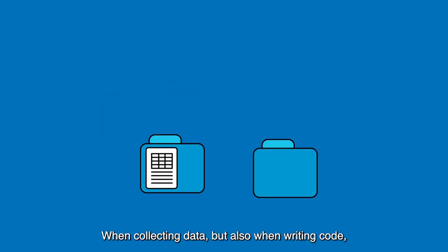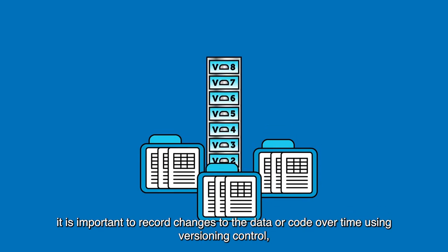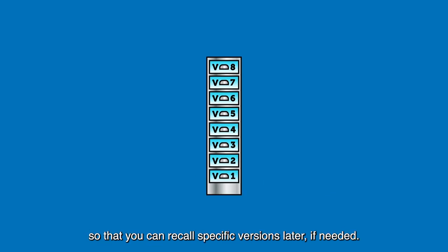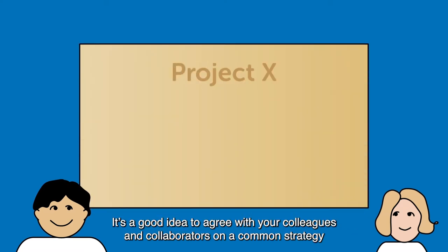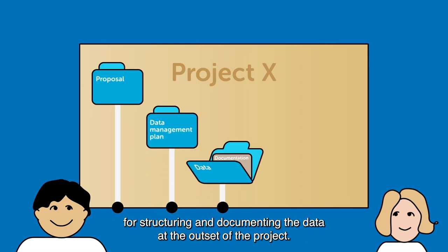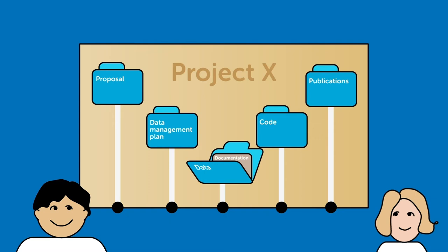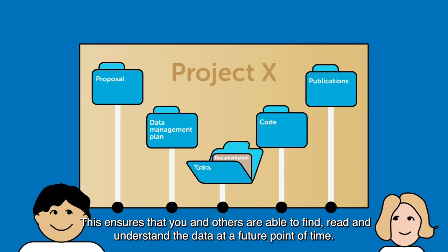When collecting data, but also when writing code, it is important to record changes to the data or code over time, using version control so that you can recall specific versions later if needed. It is a good idea to agree with your colleagues and collaborators on a common strategy for structuring and documenting the data at the outset of the project. This ensures that you and others are able to find, read, and understand the data at a future point of time.